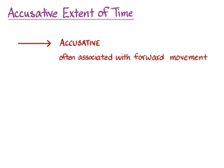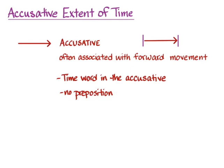The accusative tells us something about forward movement. With time, we're thinking about a beginning time and an end time, represented by two lines, and what the accusative does is talk about getting from the beginning to the end — all the way from the first line to the second line. In Greek, we take a time word in the accusative with no preposition. The English translation depends on the time word: we might say 'for the time,' or simply the time, or sometimes 'all day,' because it talks about going for the whole extent of the day.